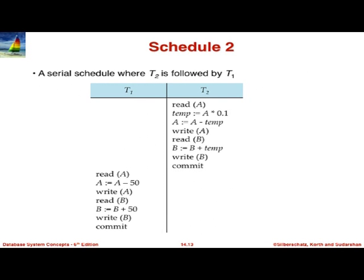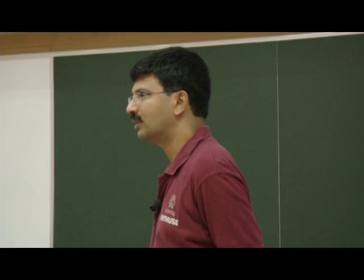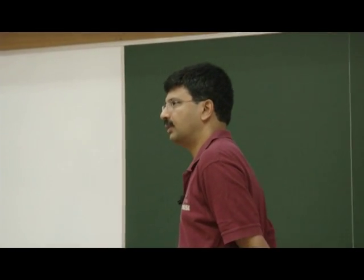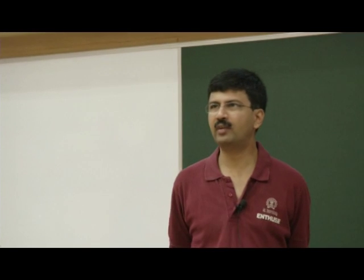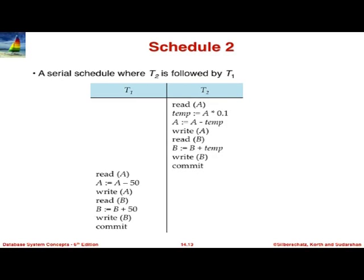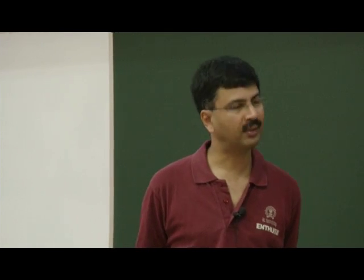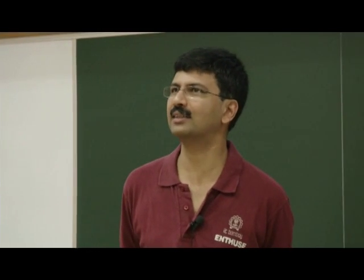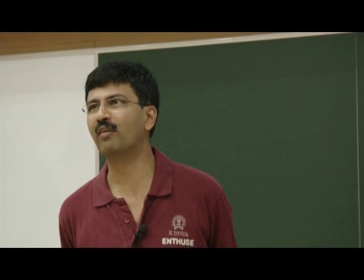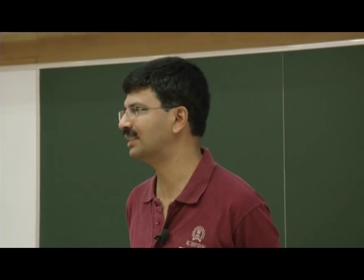Here is another schedule for the same pair of transactions, but flipped. What is the difference? In the first case you transferred 50 and then transferred 10%; in the second you transfer 10% first and then transfer 50. The final result is not the same: 10% is taken before subtracting 50 in one case and after in the other. There will be a 5-rupee difference in what is transferred between the two cases.